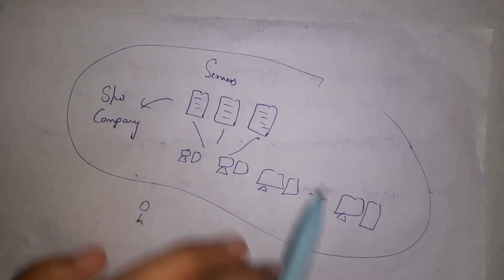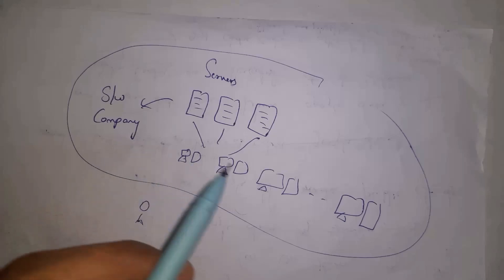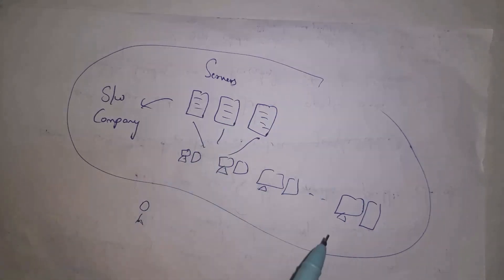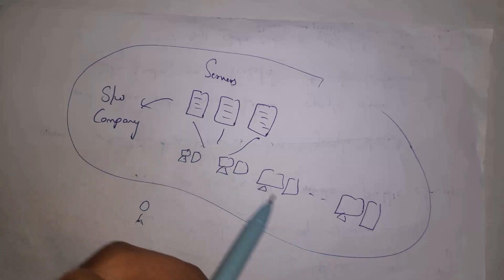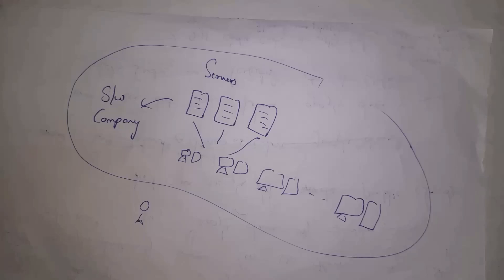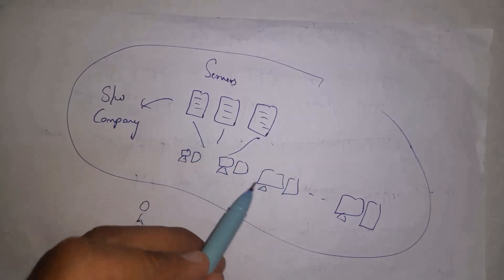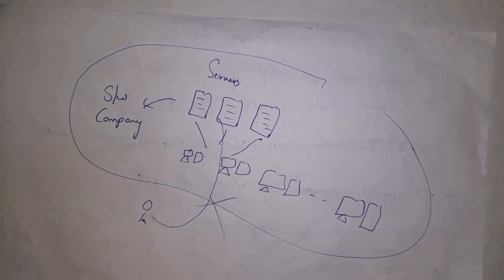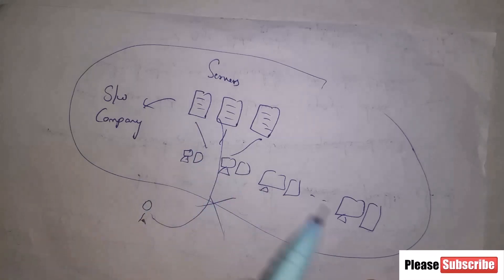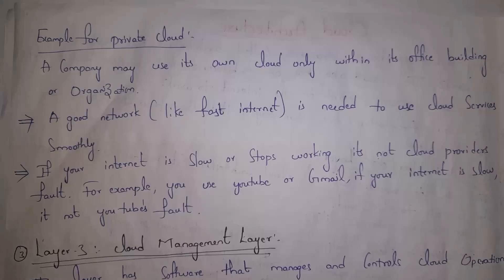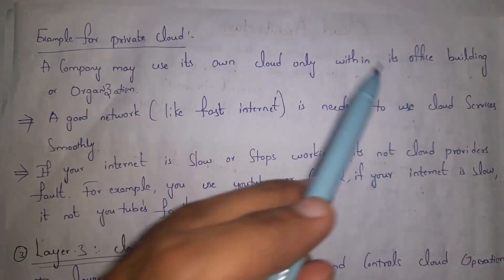As an example of private cloud: a software company may purchase its own servers, and only employees in that company can use those servers — we call this a private cloud. All the devices, computers, and servers within the company are connected to each other through a local area network. So private cloud is a setup where only internal users can access the servers, connected via LAN.